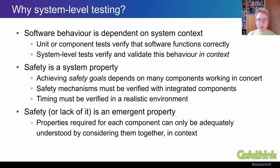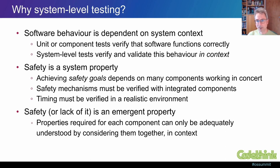Safety is a system property rather than a property of individual components. While we can test components in isolation to ensure that their logic and implementation are sound, some properties may be dependent on the final system context — whether the underlying processor architecture, or interactions with hardware or other software components — and we can't always account for these or make them visible in the design. Furthermore, the factors that can lead to a lack of safety may be emergent properties of that system, which means they can only be properly understood by considering components together, in context, and with the system's overall safety goals in mind.